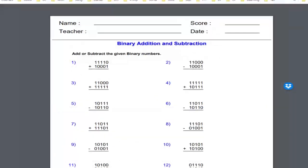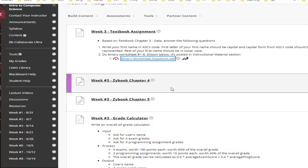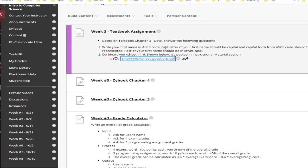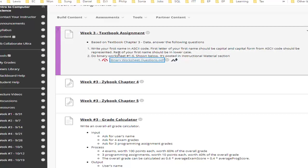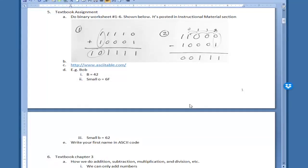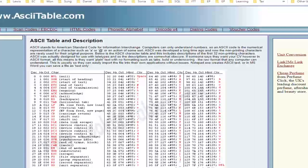The other portion of the homework is to write your name in ASCII code. First letter of your first name should be capital, and the capital form from ASCII code should be given or represented. Rest of your first name should be in lowercase. What is ASCII code in the first place?